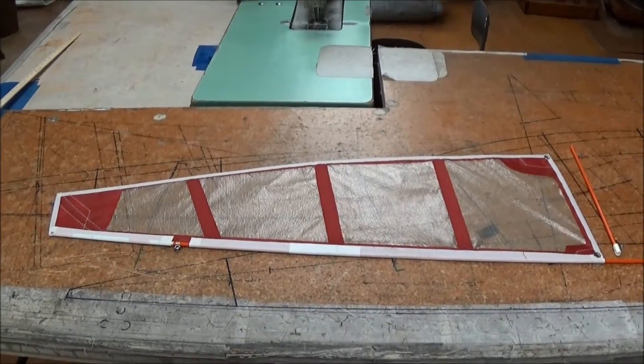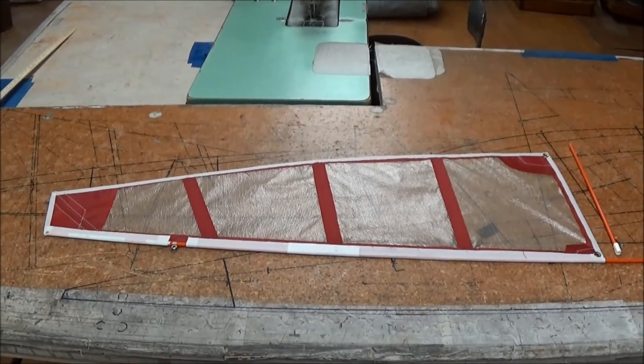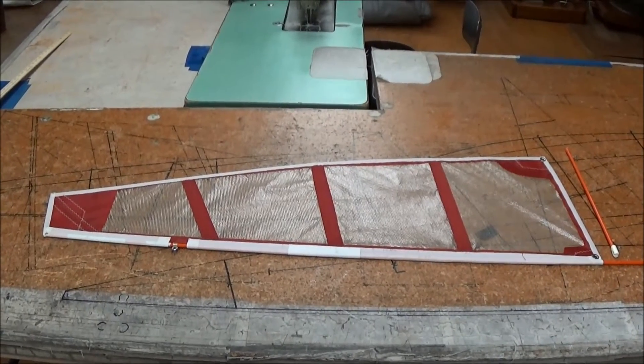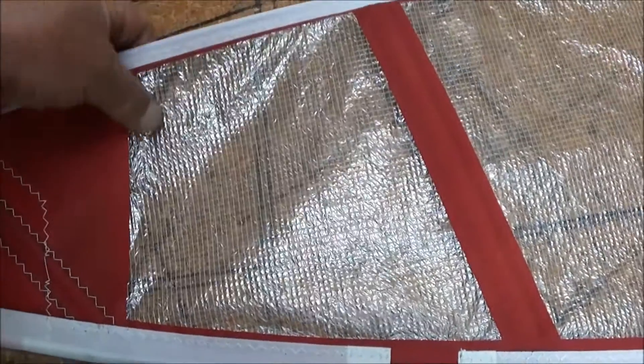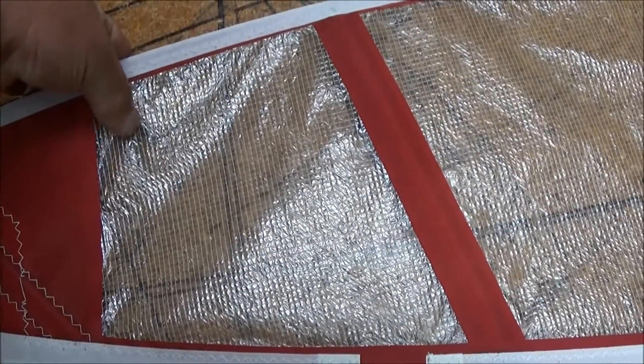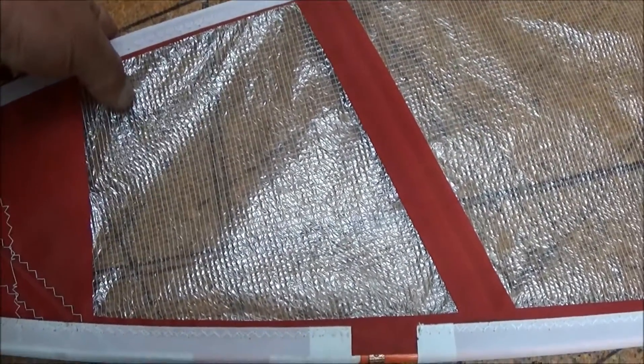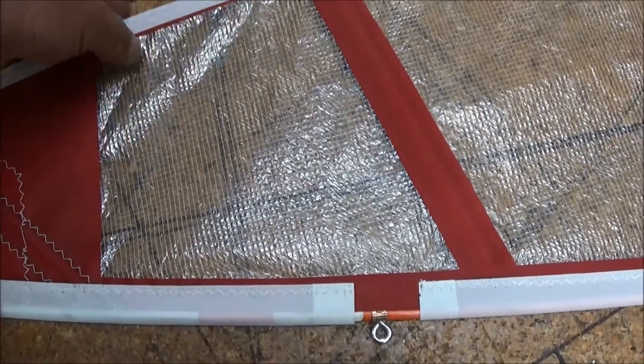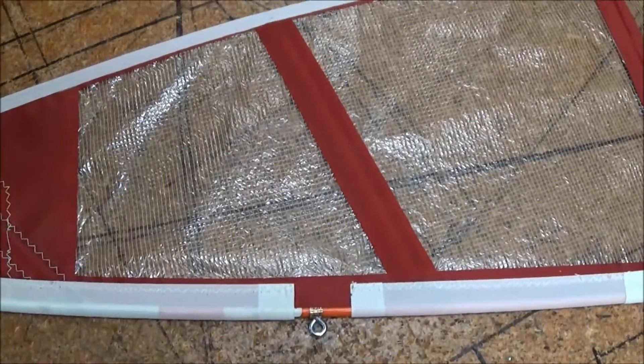Okay, this is the sail for the land sailor laid out. It's got three battens plus one headboard batten. This cloth is a laminate mylar with little squares in it. Super light, non-stretch, works real well for this kind of stuff or even any RC sailing sail.